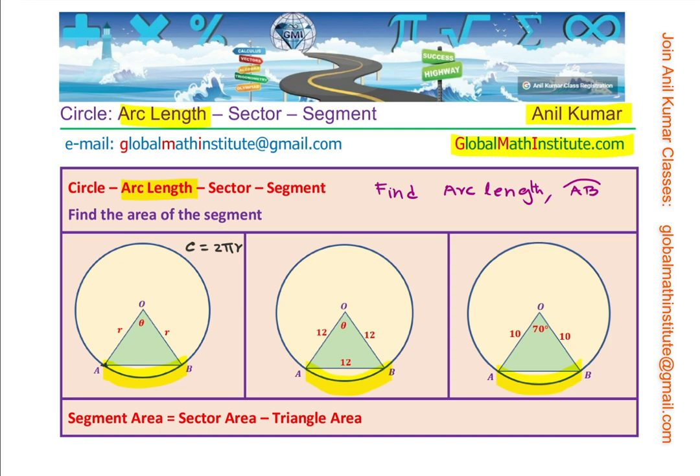The angle is theta. The circle has infinite symmetry and therefore we can find the length of the arc AB as equal to the ratio of the angle. It is basically equal to 2πr times the angle theta over the total angle.